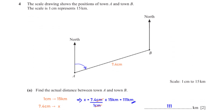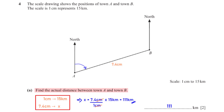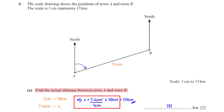The scale drawing shows the positions of town A and town B. The scale is 1 centimeter represents 15 kilometers. When we measure the distance between A and B on the scale drawing, we get 7.4 centimeters. Using the scale conversion, we cross multiply and make x the subject to get the actual distance between A and B, which is 111 kilometers.